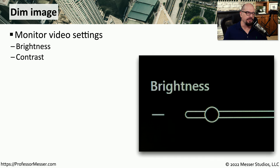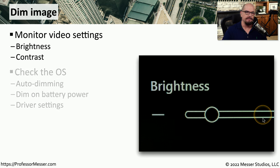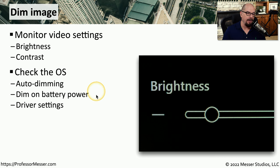If the display on the monitor is very dim, you may want to check the brightness and contrast settings. There are usually configurations on the monitor that allow you to modify what these values are, and you can adjust them to match the lighting of your work area. Some operating systems will automatically dim the screen depending on the time of day, or they might dim it based on how much power you have in the battery of your laptop.